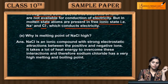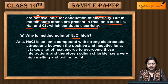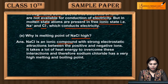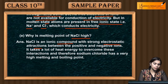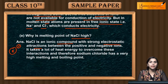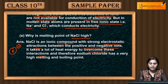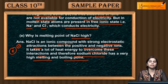Next: why is the melting point of NaCl high? NaCl is an ionic compound with strong electrostatic attractions between positive and negative ions. These are the strongest interactions, and it takes a lot of energy to overcome them. Therefore, sodium chloride has a very high melting and boiling point.